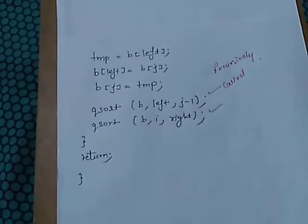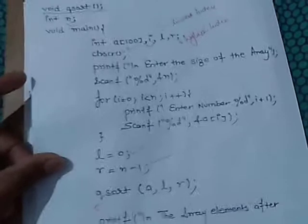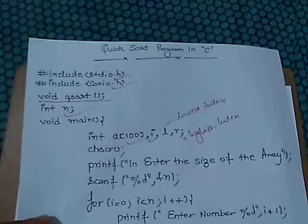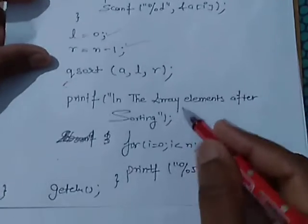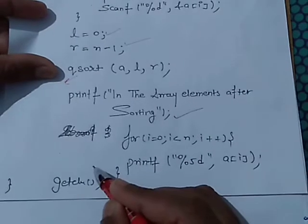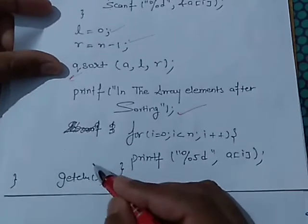Now again see the main function here. We have printed the array elements after sorting.